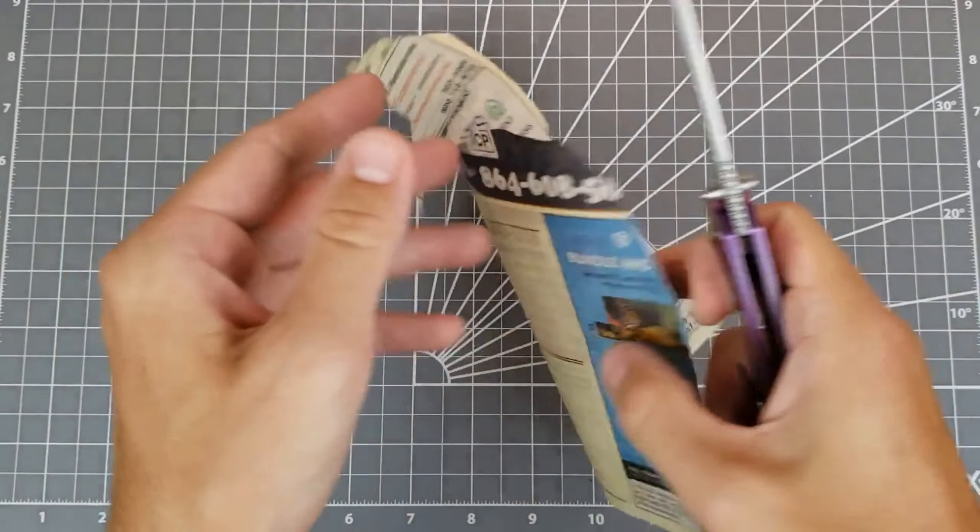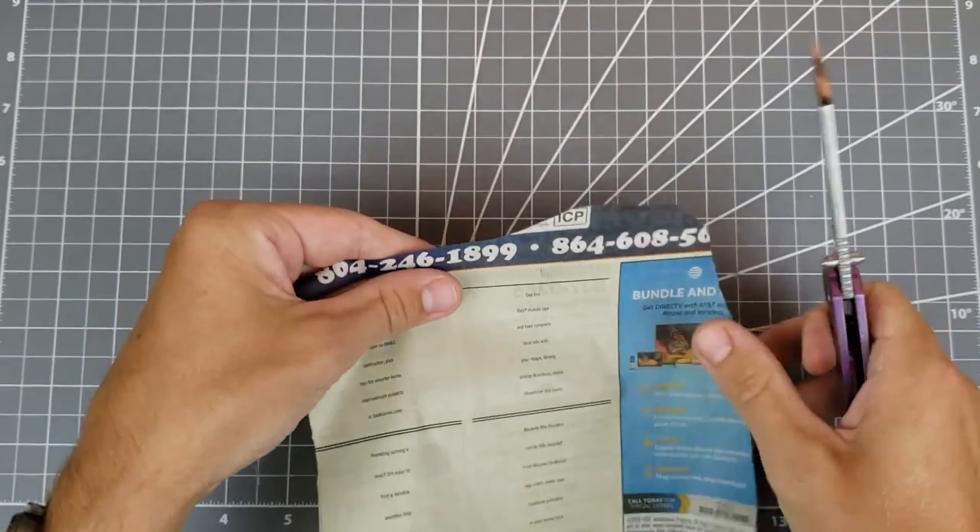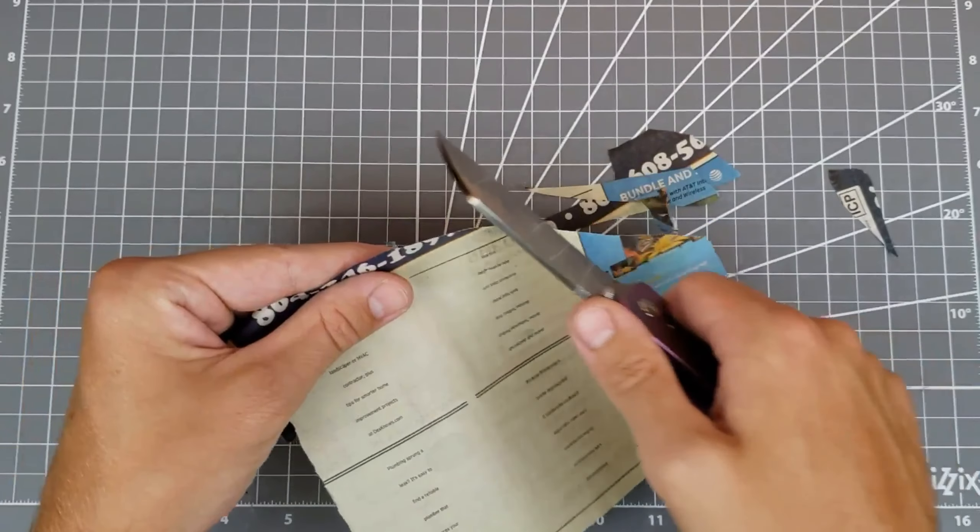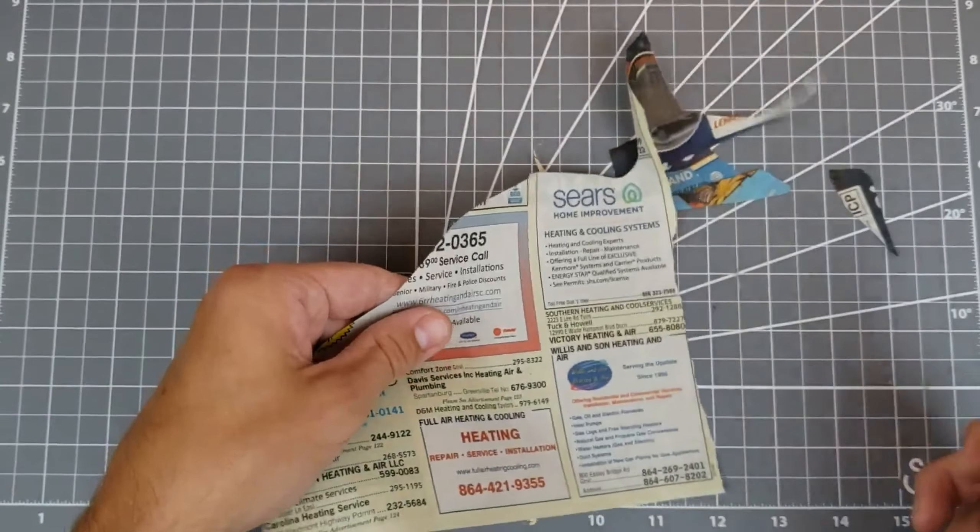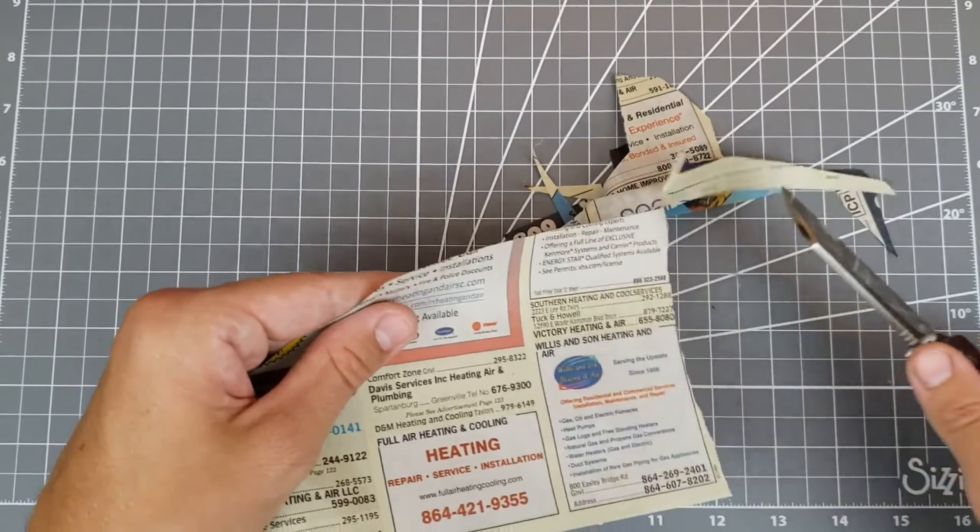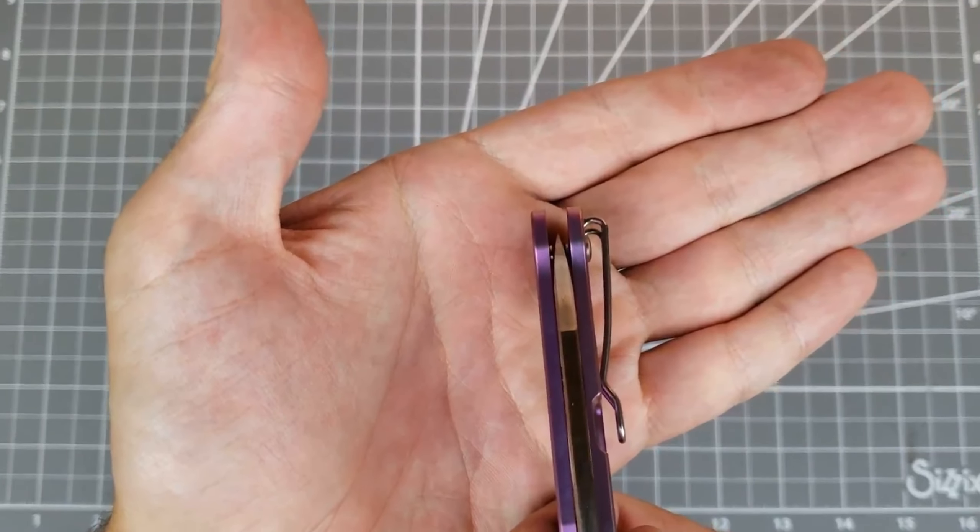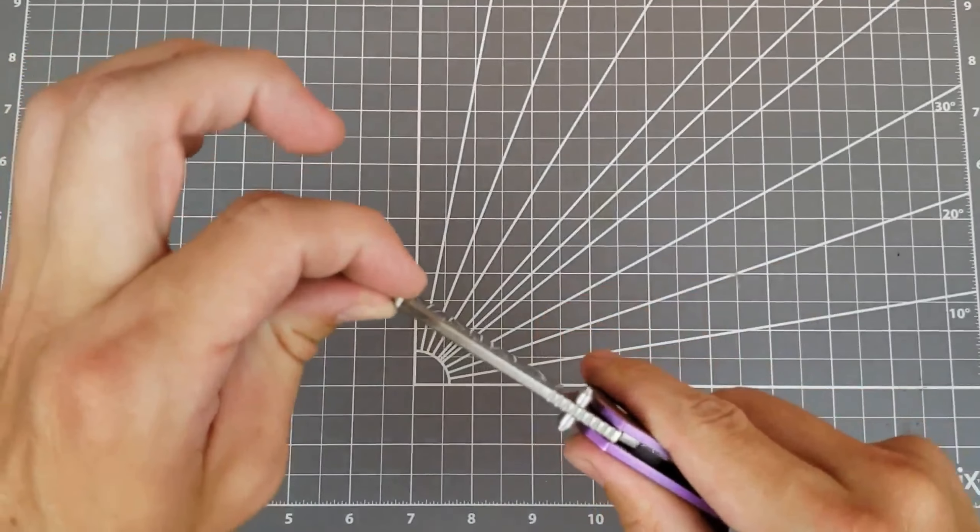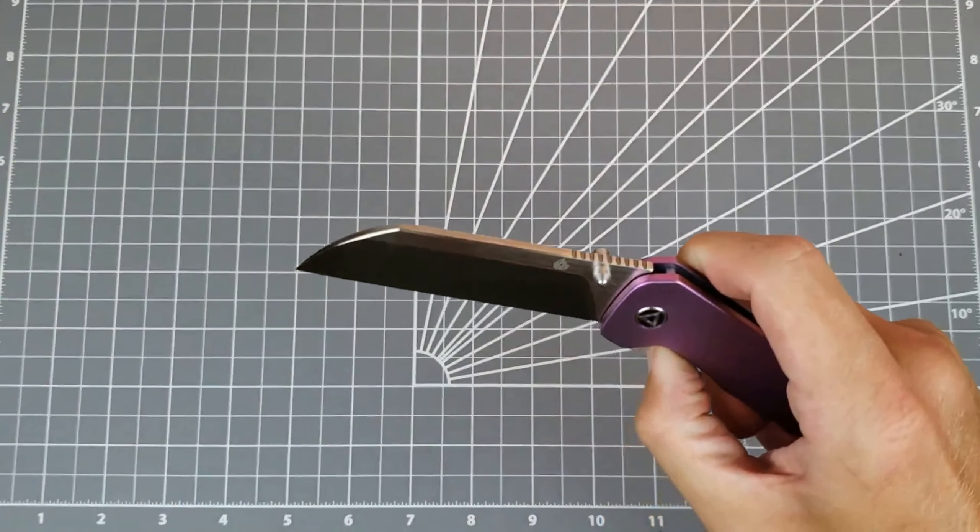Take a look at this factory edge. Feeling pretty nice. Not a bad factory edge at all. Looks like it's perfectly centered. And no blade play. No detent lash. Very nice. No lock rock, nothing like that.